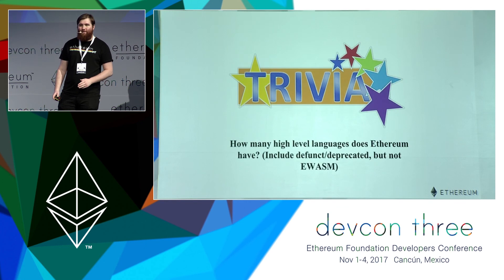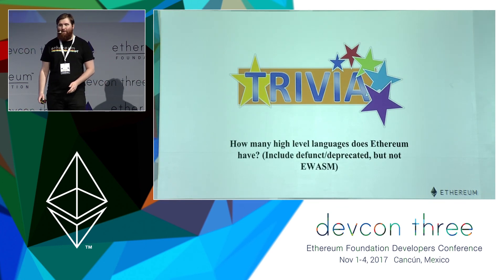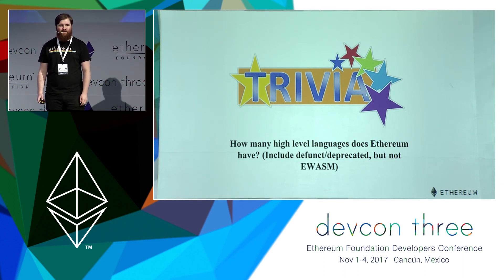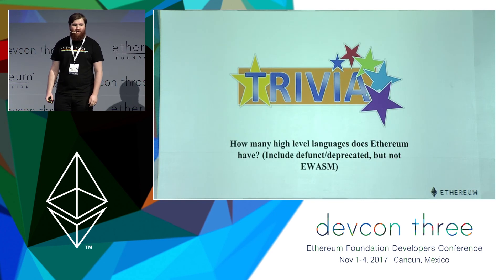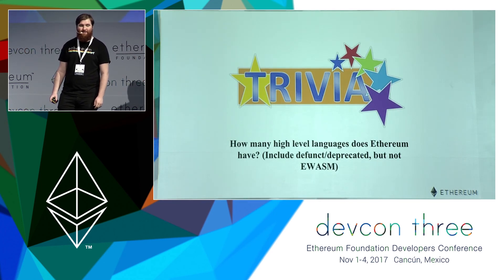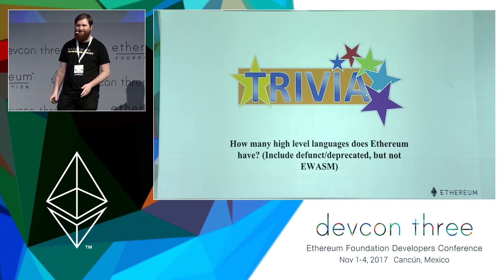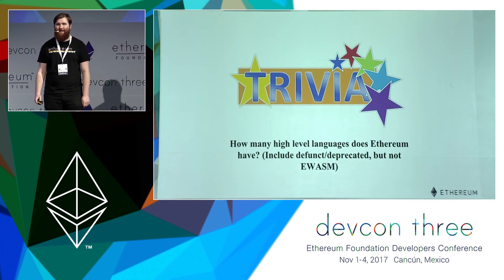If you've been coding in Solidity or been involved in the Ethereum community for a while, this talk might be a little boring, so I've decided to add a trivia question: how many high-level languages does Ethereum have? We're counting defunct languages, but not things like Ewasm — so you can't say Rust or C or others that would compile to Ewasm. We'll get the answer in a few slides.